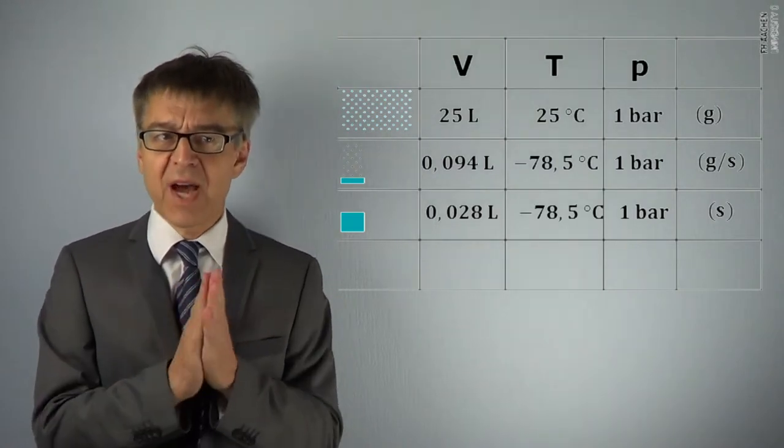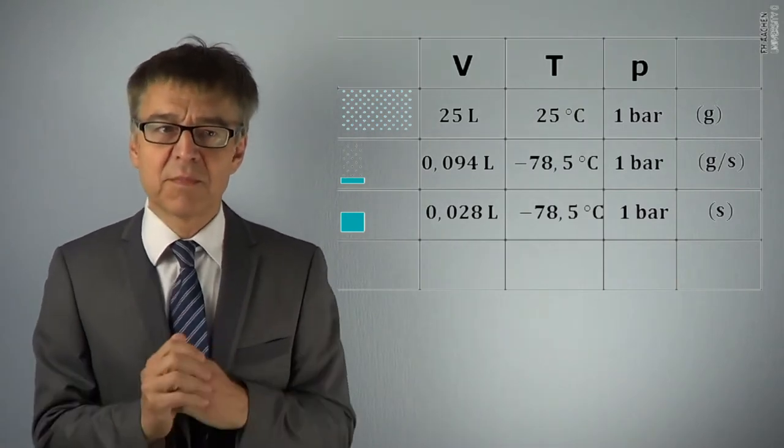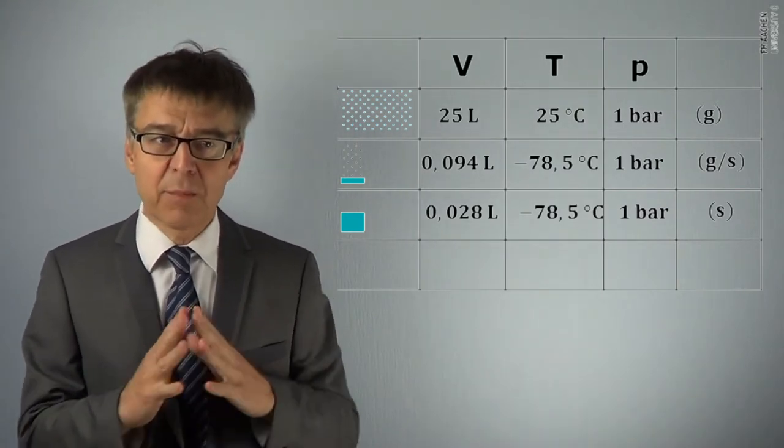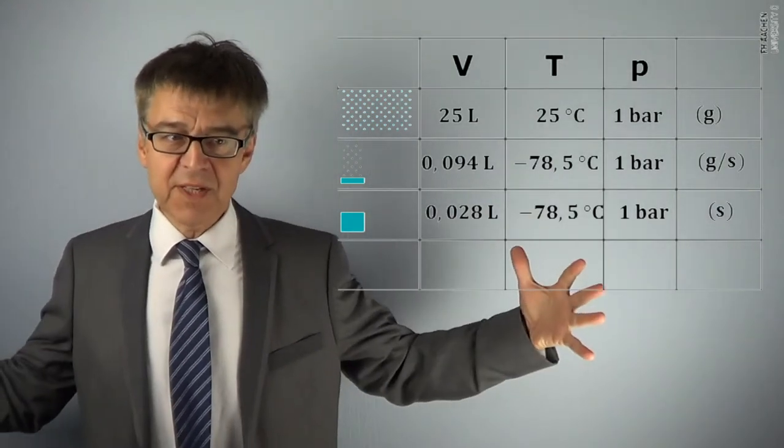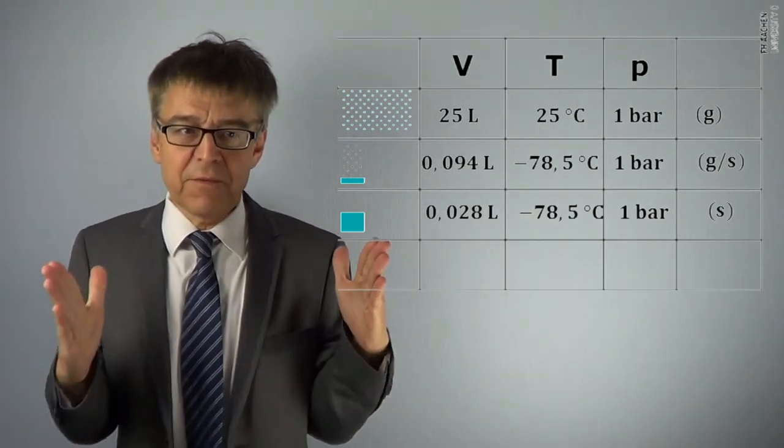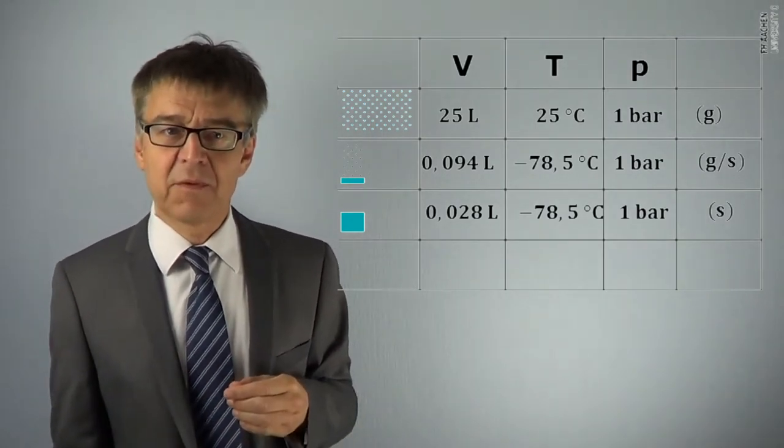In order to liquefy carbon dioxide, we have, for example, to start from state 1 and compress isothermally from 25 liters to 94 milliliters. This is going to be state number 4.